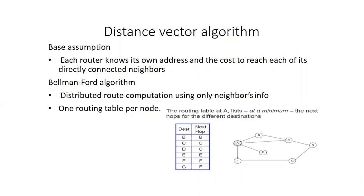The Bellman-Ford algorithm performs distributed route computation using only neighbors' information. Each node maintains a routing table that is updated based on link changes or cost changes. The routing table lists at a minimum the next hop for each different destination.